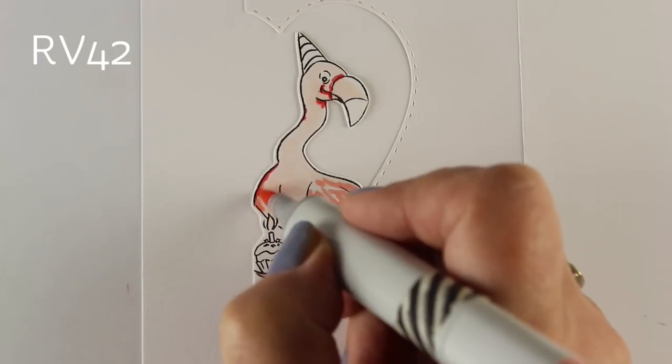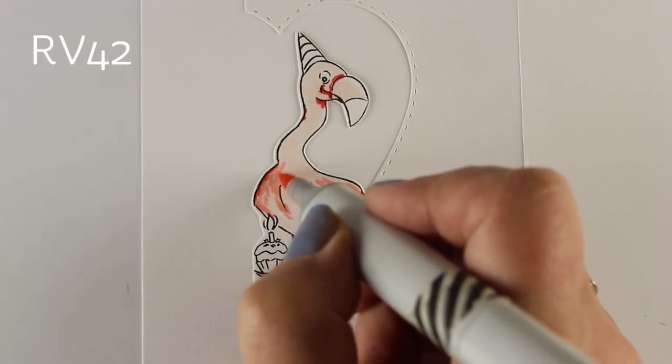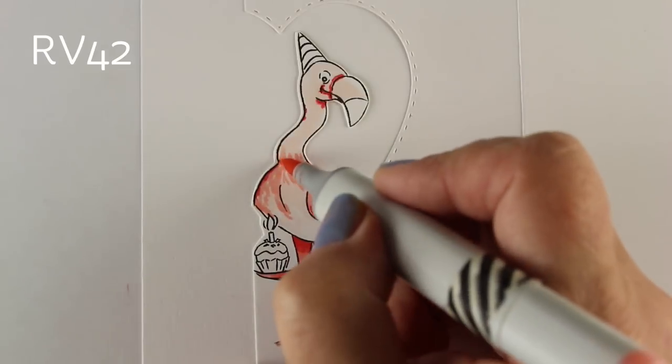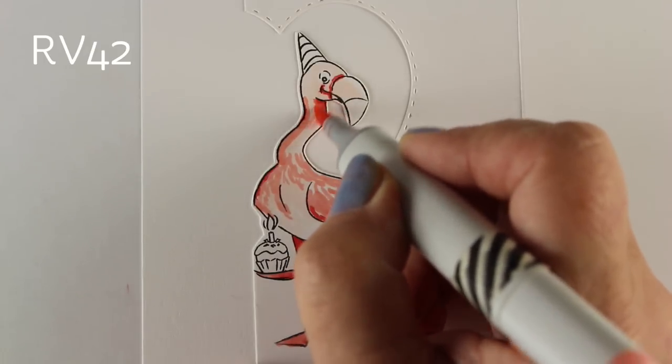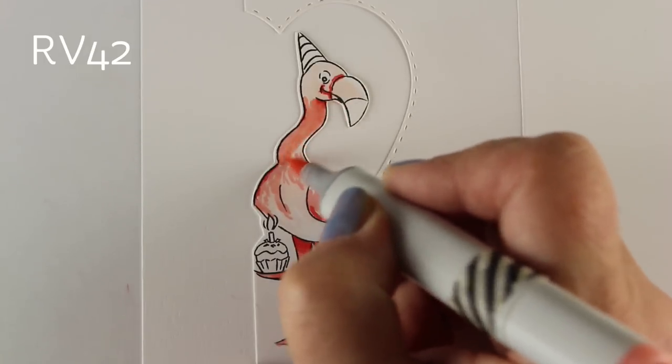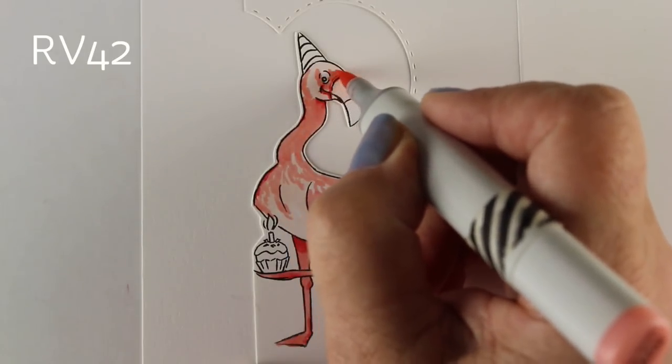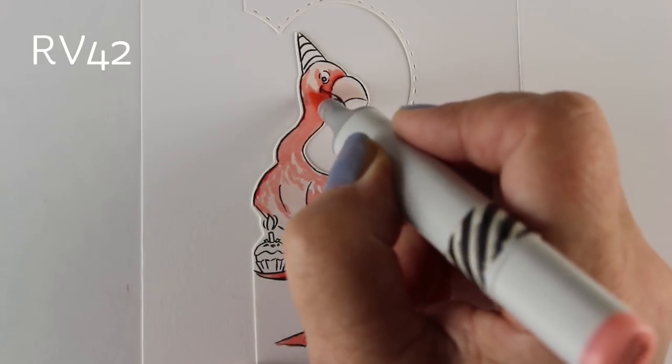I'm going to use my secondary color, which is the RV42. If you don't have this one, you can probably use like an R21 or R23 to do this mid-tone color. I'm drawing in some feathers for him so that he has a little bit of texture to them, because they're feathered birds, they're not perfectly smooth birds. So I'm going to give them a little bit of realism, a little tiny bit.